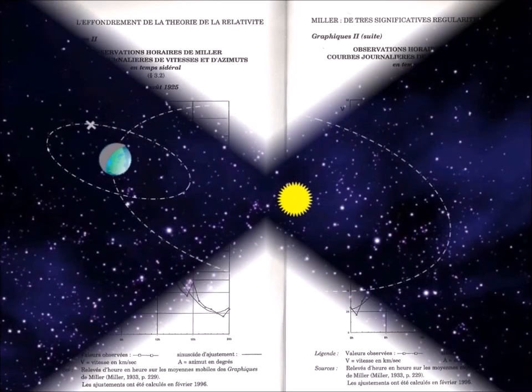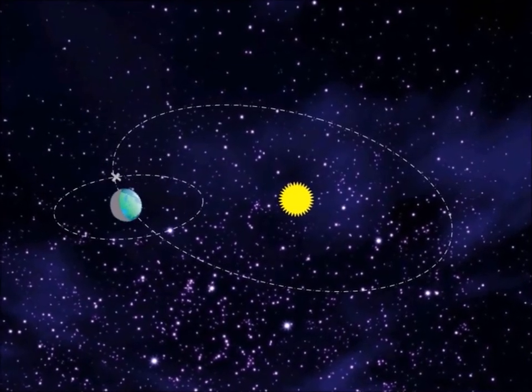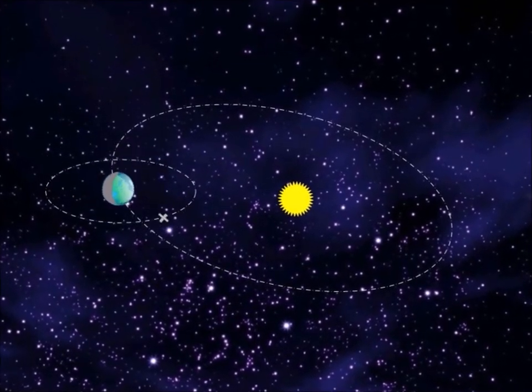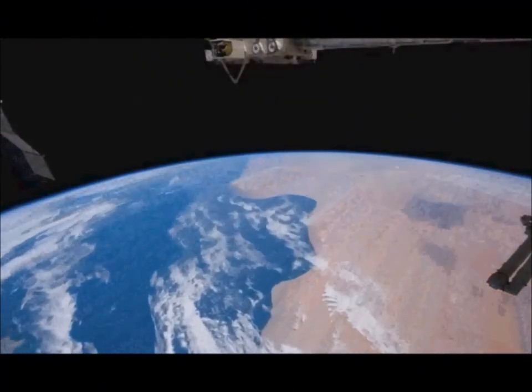A Michelson interferometer, placed in weightlessness in a satellite, could map the velocities of the medium of space flows and thus confirm both the theory of vortices and the statistics of Professor Allais.